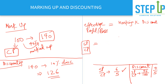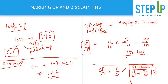To illustrate: if something is marked up 10% (= 11/10) and then discounted 10% (= 9/10), the effective SP/CP = 11/10 × 9/10 = 99/100, meaning SP is slightly less than CP — a 1% loss. This approach gives us the answer in seconds.